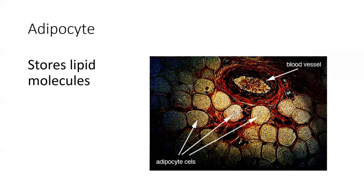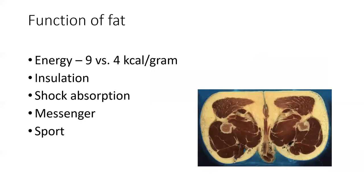We like to have blood vessels around those adipose cells so that we can quickly get the triglycerides out of the adipocyte into the blood and into the tissue that requires that energy. Our goal of stored fat is to use it for energy when we need it — our body stores fat because it thinks we may not eat again. The major energy source value is nine kilocalories per gram of fat, as opposed to carbohydrates and proteins with four kilocalories per gram. So we get over double the amount of energy per gram in fats compared to carbohydrates and proteins — a much more efficient energy source.